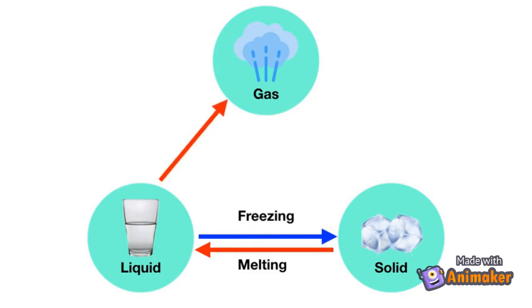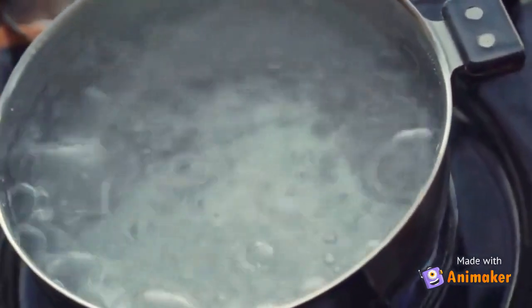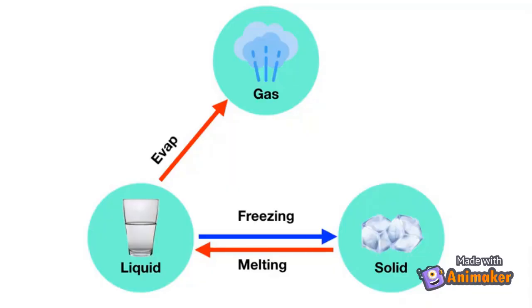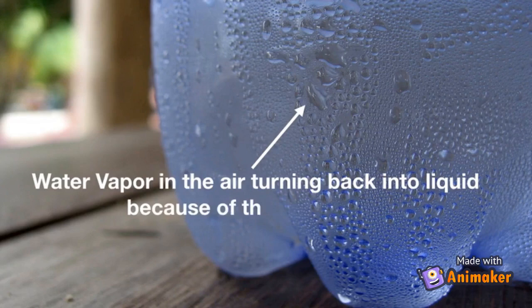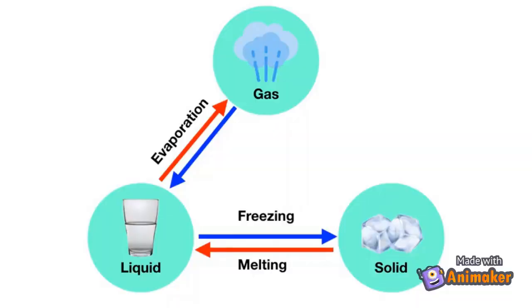If a liquid turns into a gas, like when you boil a pot of water, we say that the liquid is evaporating — this is an example of evaporation. There are also times when a gas will turn back into a liquid. If you've ever had a bottle of cold water, you see little droplets form on the outside. This is happening because water vapor in the air is turning back into a liquid because of the cold water inside. We call this process condensation.